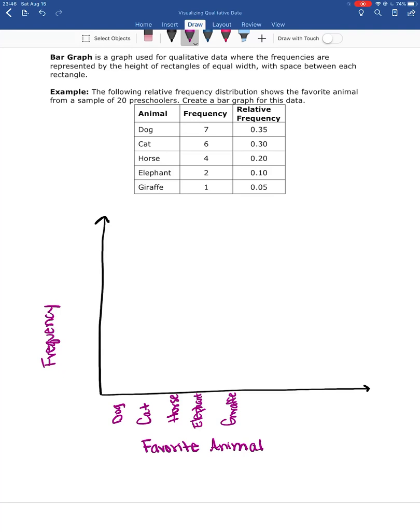So I'm gonna look at frequency, and then our highest frequency was seven. So I'm gonna create some little tick marks going up to seven at least. We want these tick marks to be equally spaced. If they're not equally spaced, that's gonna make things look a little bit distorted.